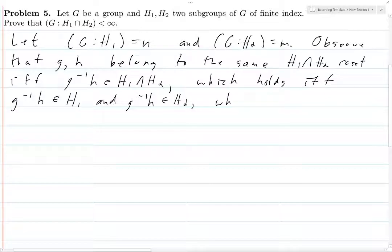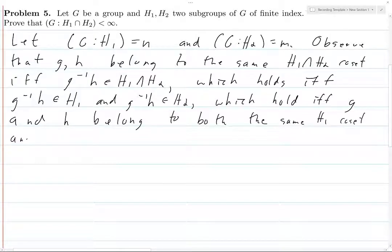And these hold if and only if, not H1 and H2, but g and h belong to both the same H1 coset and to the same H2 coset.